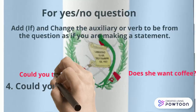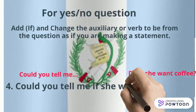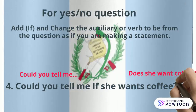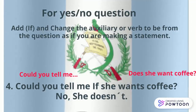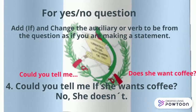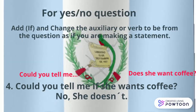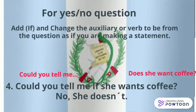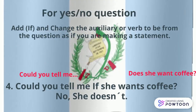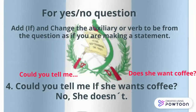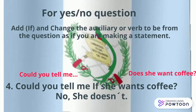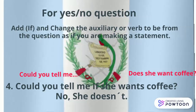Another example: using 'could you tell me' and the question 'does she want coffee?' — the embedded question becomes: 'could you tell me if she wants coffee?' Here, 'does' disappears and 'wants' takes the -s form.